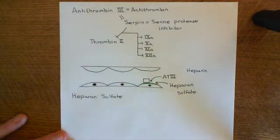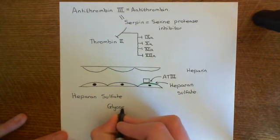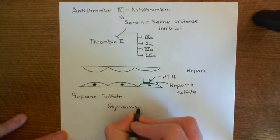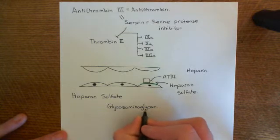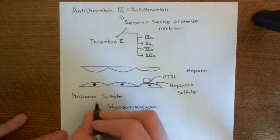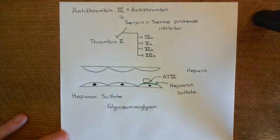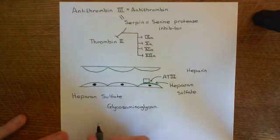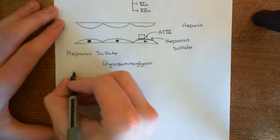Heparan sulfate is what is known as a glycosaminoglycan. A glycan is basically a polysaccharide — specifically a polymer of modified glucose units. What you have in a glycosaminoglycan is a repeating disaccharide: two sugar molecules bound together, repeated over and over.